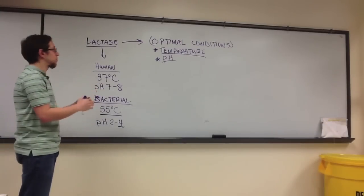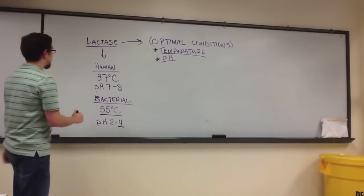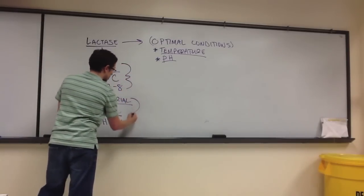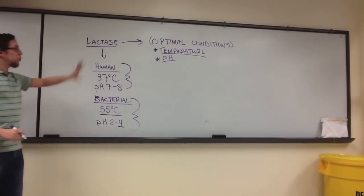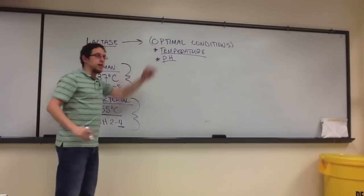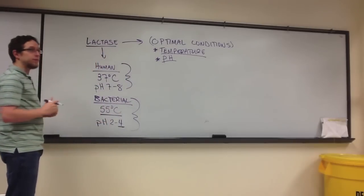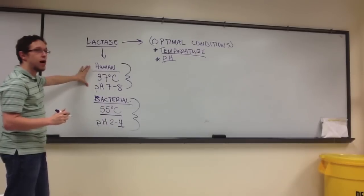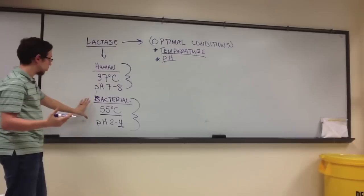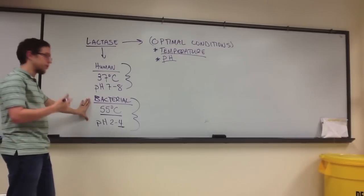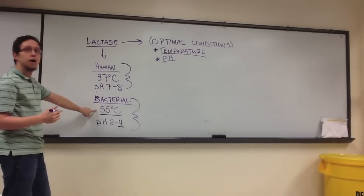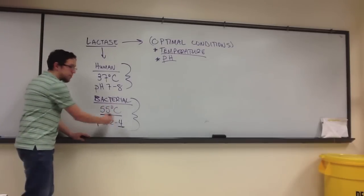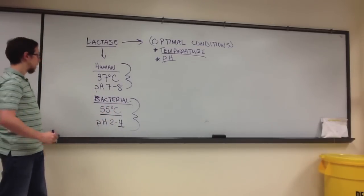So what does this mean in terms of this whole experiment? Well, it means that depending upon the results we obtain when we test both of these optimal conditions, we might be able to determine if the lactase in question was derived from human cells, or a specific type of bacterial cell that is capable of surviving at temperatures pretty close to this, and pH is close to that.